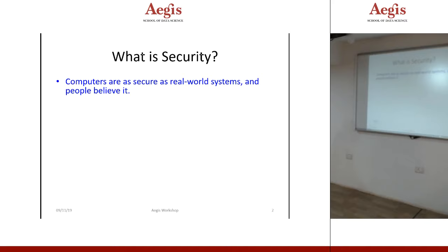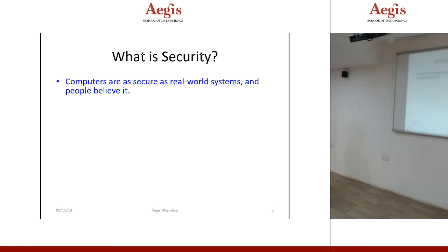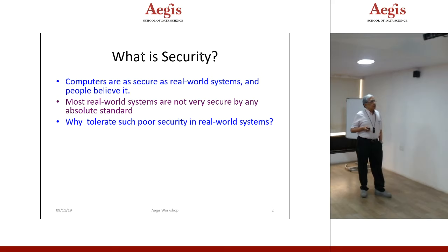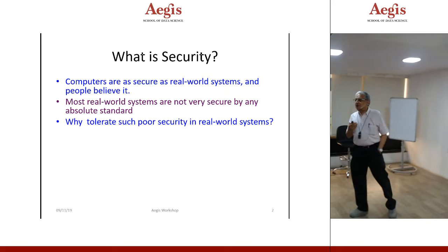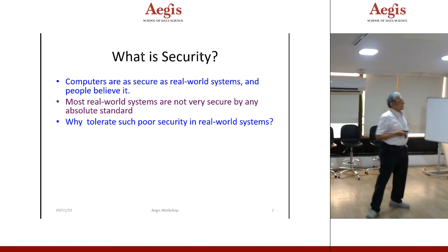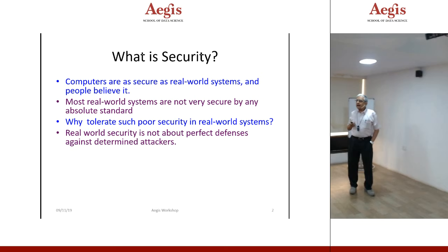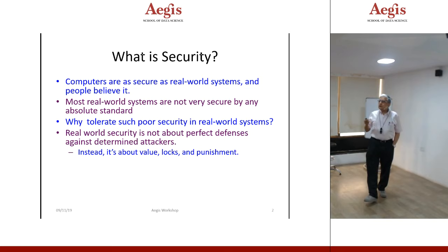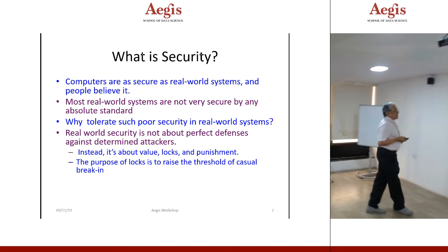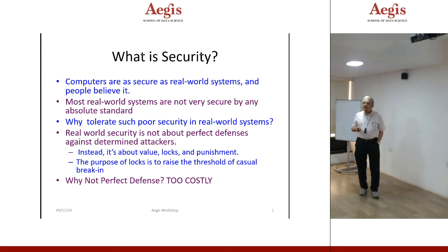So what is security? Real-world systems are as secure as people believe them to be, but most real-world systems are not very secure by any absolute standard. Why do we tolerate such poor security? Every software is infested, and we sign agreements accepting whatever way it is done — otherwise you have no option. Real-world security is not about perfect defenses against determined attackers. Instead it's about value, locks, and punishment. A lock is a deterrent — somebody just won't casually take it. The purpose of locks is to raise the threshold of casual breaking. Perfect defense becomes too costly and almost unusable.